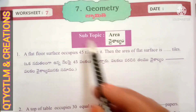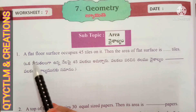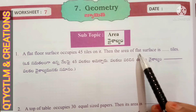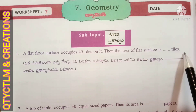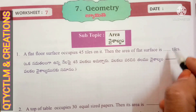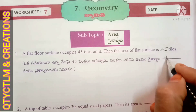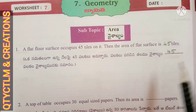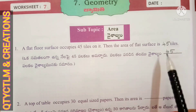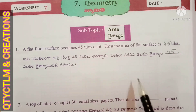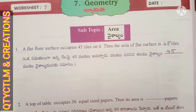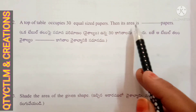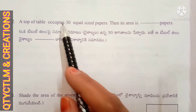Next, worksheet number 7, subtopic area. First question: a flat floor surface occupies 45 tiles on it, then the area of the flat surface is 45 tiles. The place occupied by the floor is equal to 45 tiles — we call this the area of the floor equals 45 tiles. Next question: top of table occupies 30 equal-sized papers, then its area is 30 papers.